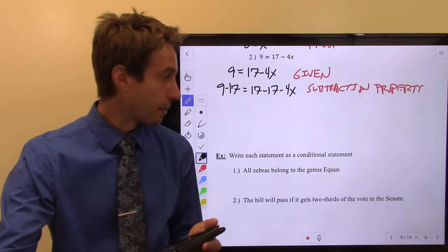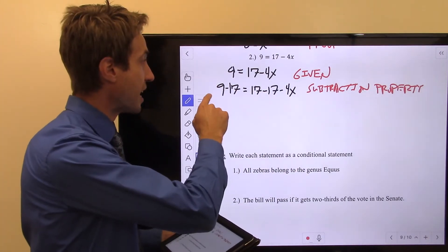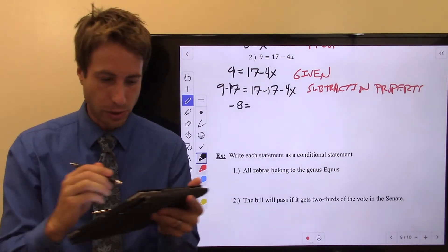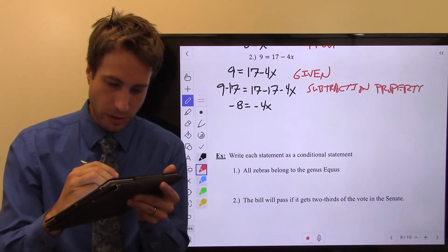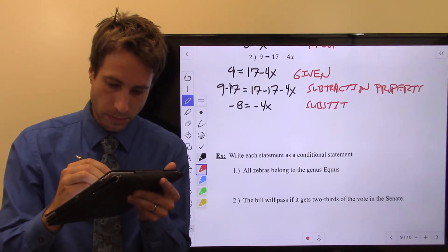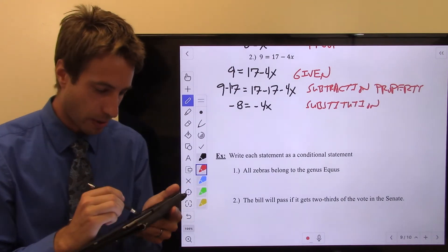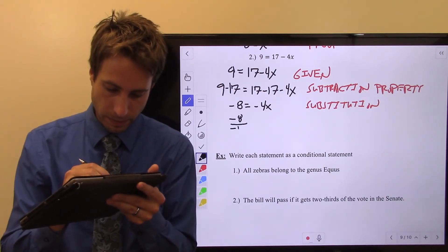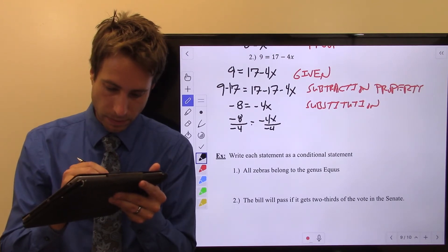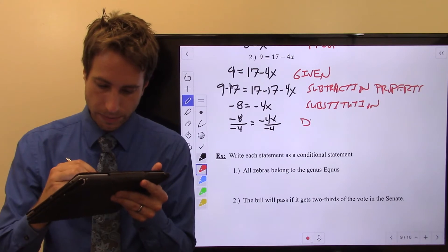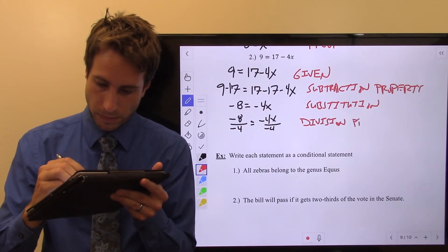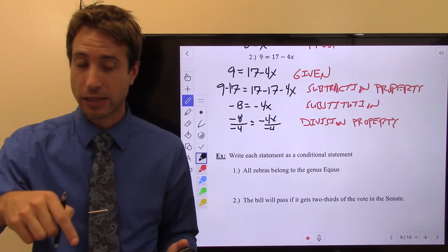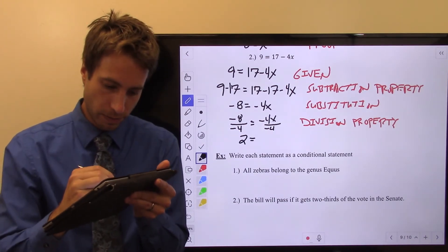Substitution, right? I'm going to do the substitution property. Because I know that 9 minus 17 is negative 8. And I know that 17 minus 17, 0 goes away. So I just have minus 4x. So that's going to be substitution. My next step to get the x by itself, divide both sides by negative 4. That is the division property. And since negative 8 divided by negative 4, the negative signs cancel each other out. And 8 divided by 4 is 2. I get x equals 2. That's my proof.